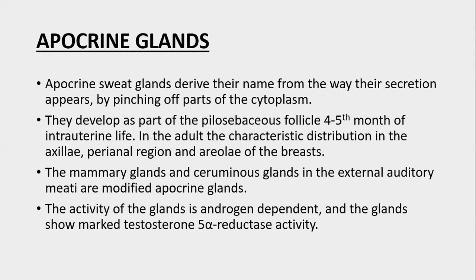The second important part of this lecture covers apocrine glands and their associated disorders. Apocrine glands derive their name from the way their secretion appears — by pinching off part of their cytoplasm. These glands develop as part of pilosebaceous follicles in the fourth or fifth month of intrauterine life. In the adult, apocrine glands are characteristically distributed in the axilla, perianal region, and areola of the breast. The mammary gland and ceruminous glands in the external auditory meatus are also modified apocrine glands. Their activity is androgen-dependent, and the glands show marked testosterone 5-alpha reductase activity.